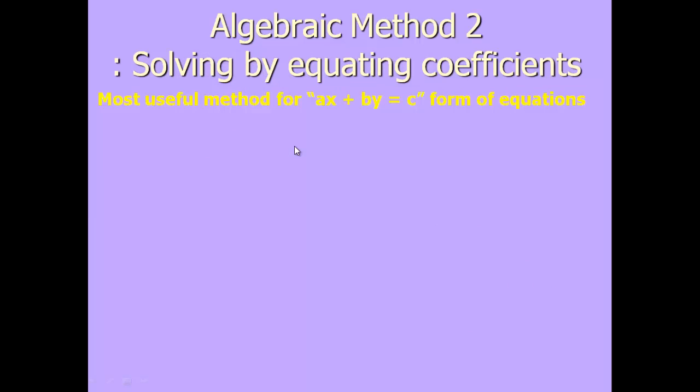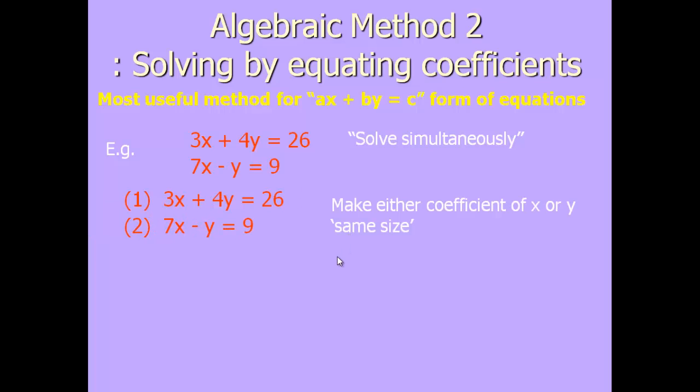Unfortunately, not all equations are in that form. If we've got equations in the form ax plus by equals c, like these. So on this example, a is 3, b is 4, and c is 26. And here we've got a as 7, b as minus 1, and c as 9. We can solve these simultaneously using the methods that we used at GCSE. We need to make the coefficient of x or y the same size. In other words, the number of x or the number of y needs to be the same. It doesn't matter if it's minus and plus, it's the number in front of the x or the y.